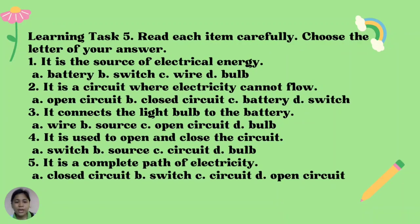For the assessment, read each item carefully and choose the letter of your answer. Number 1: It is the source of electrical energy. A, battery; B, switch; C, wire; D, bulb. Number 2: It is a circuit where electricity can flow or cannot flow. A, open circuit; B, closed circuit; C, battery; D, switch.